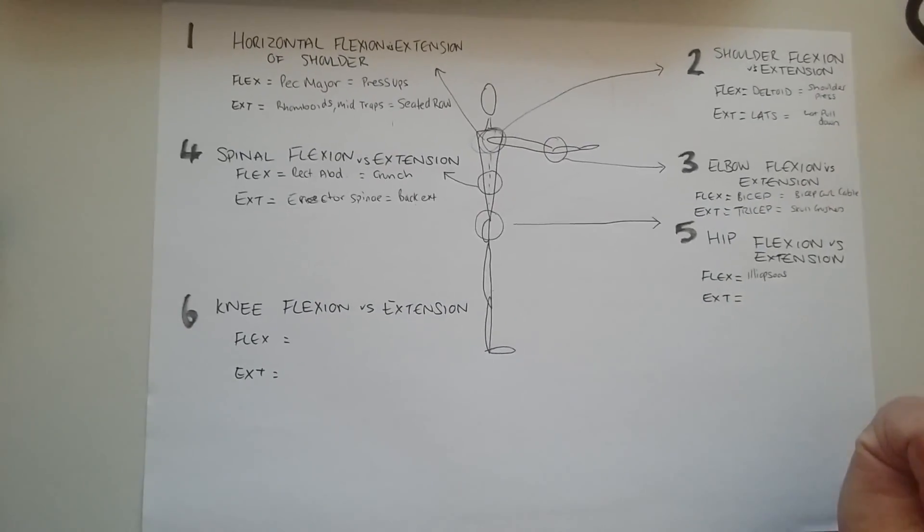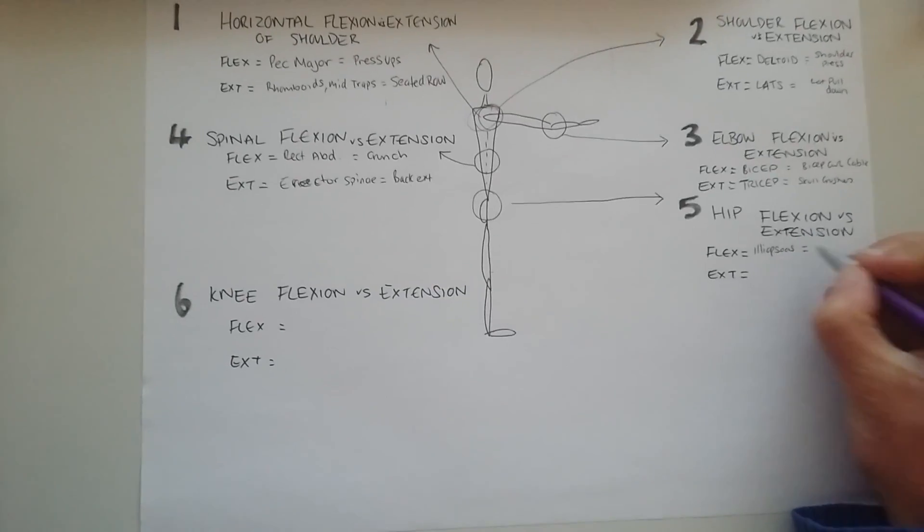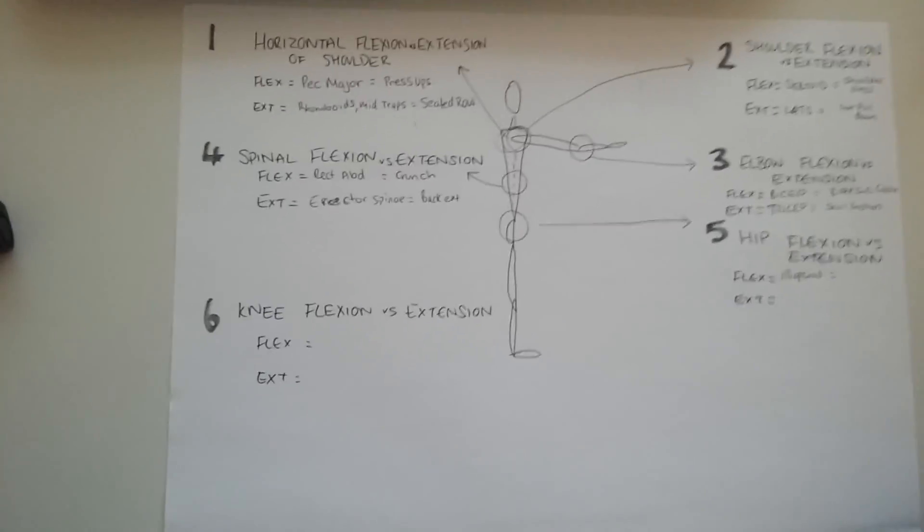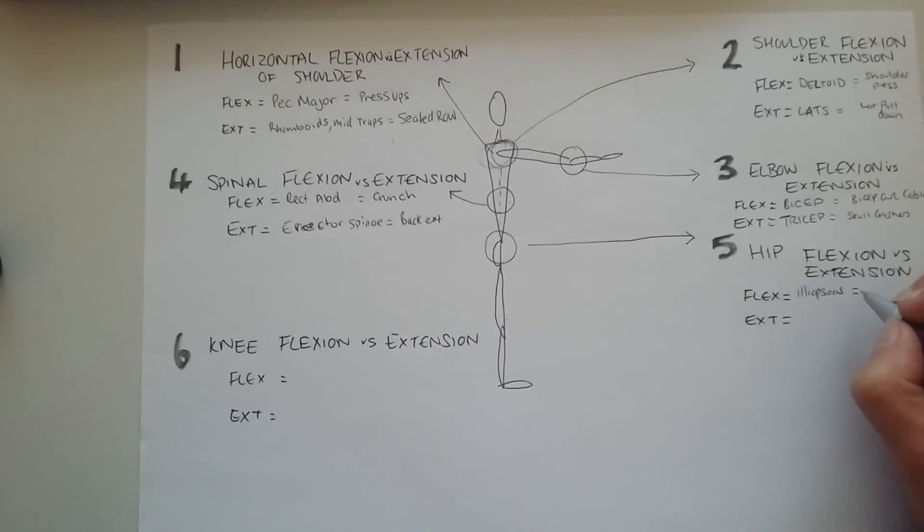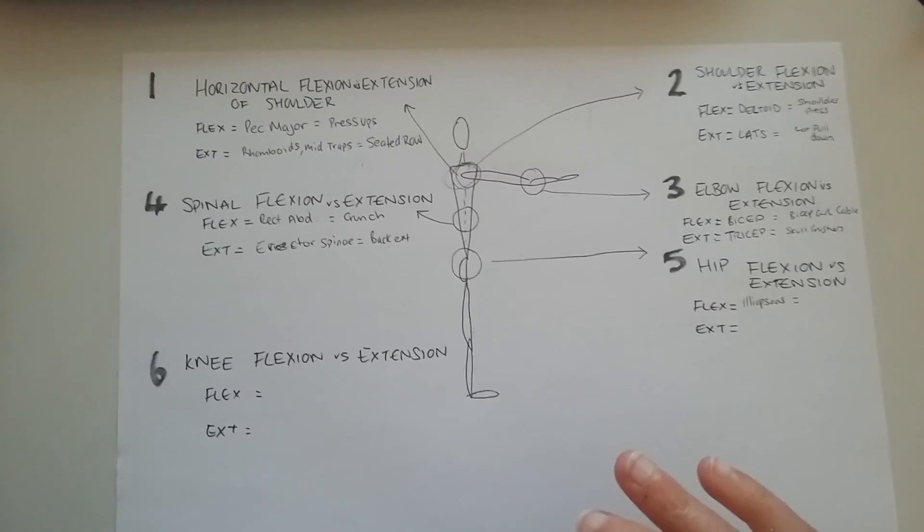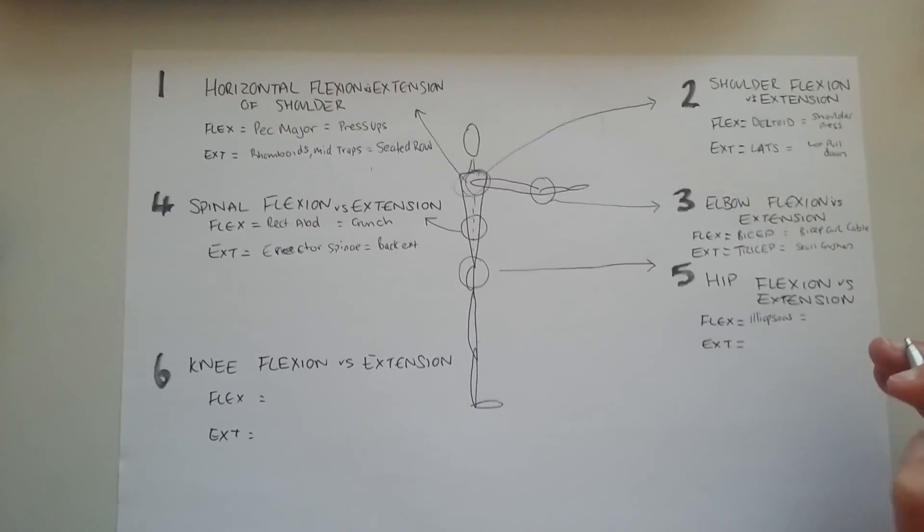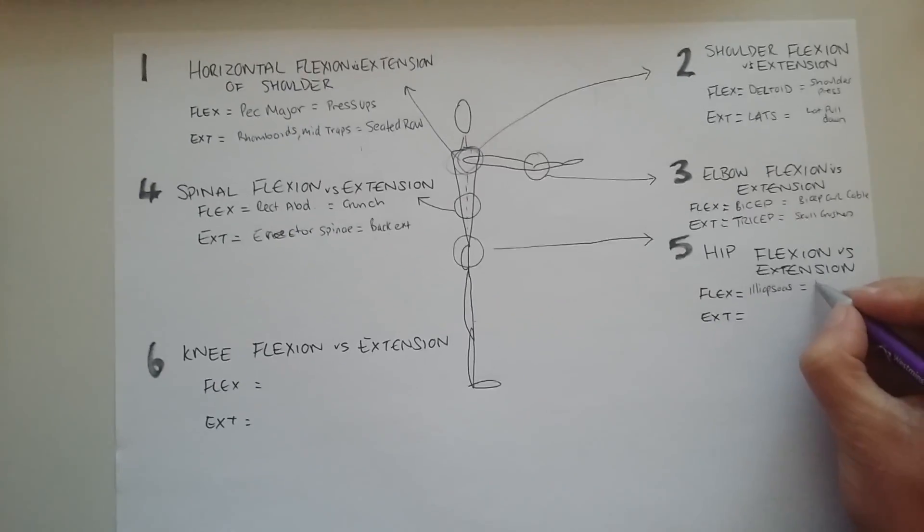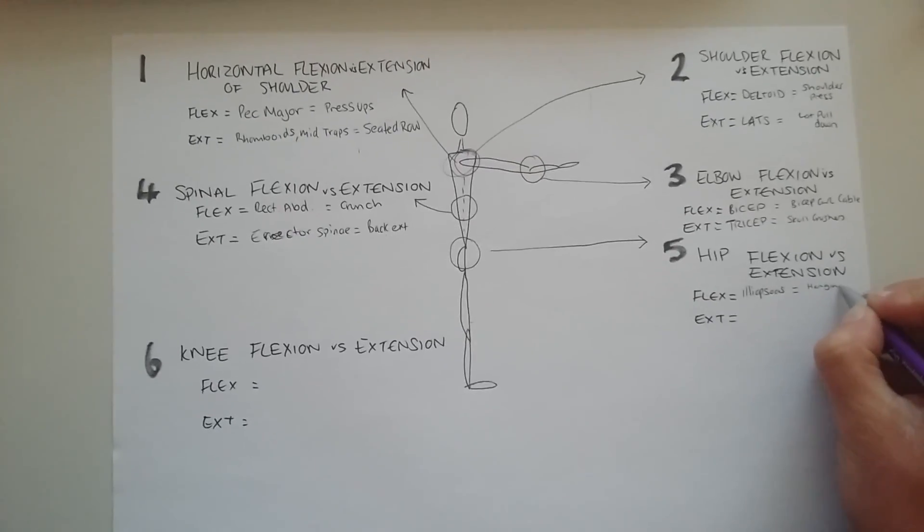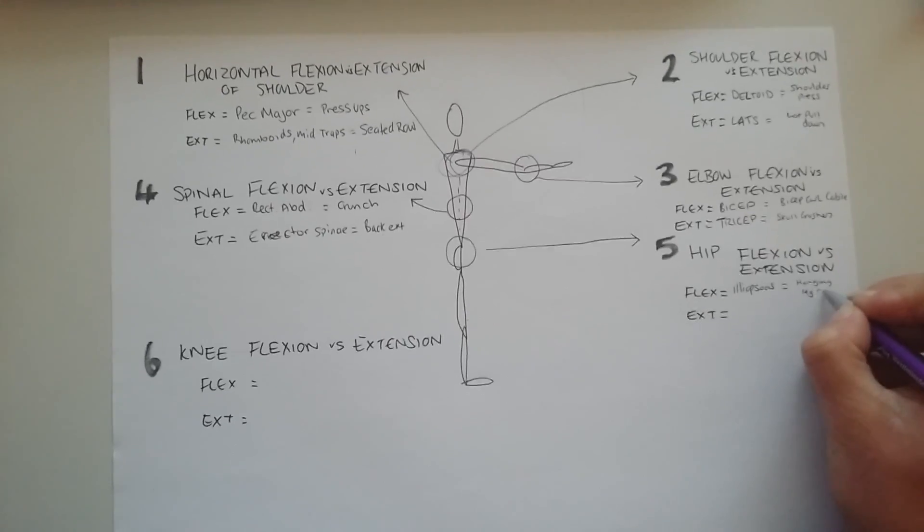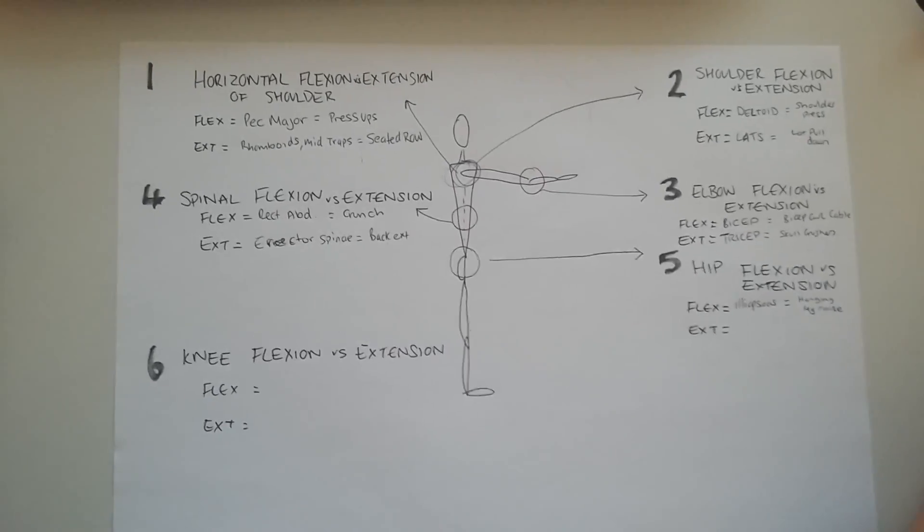So his iliopsoas is working to flex the hip. And what exercise does that? I'm going to say leg raises are a good one for that. So, you know, when you do like a hanging leg raise, something like that. Also, a full sit-up would work, but I'm going to put a hanging leg raise. Not one I personally favor, but it's a good example for this one.